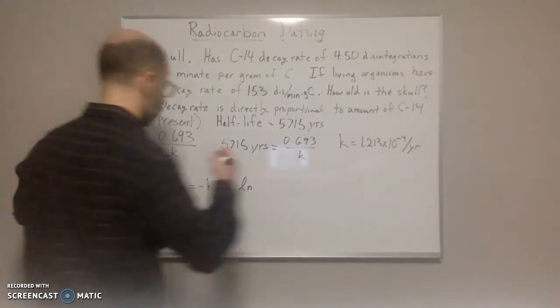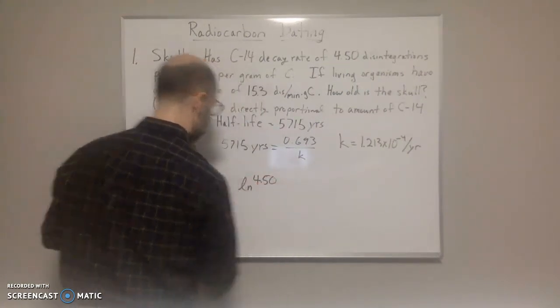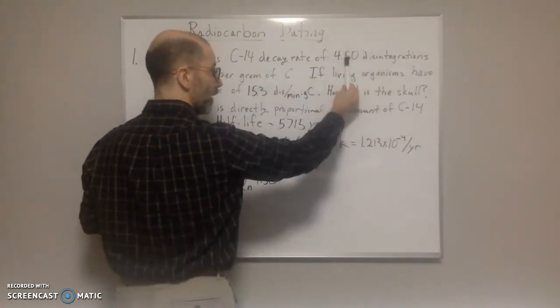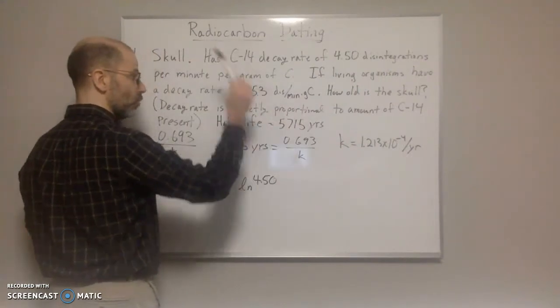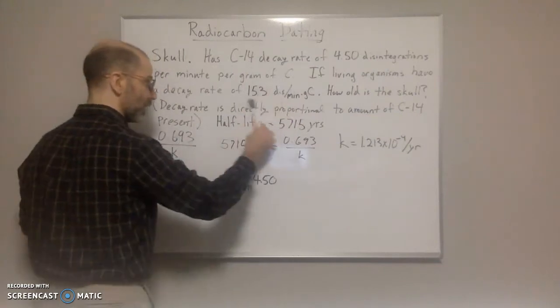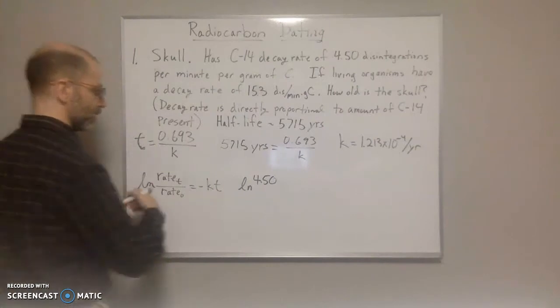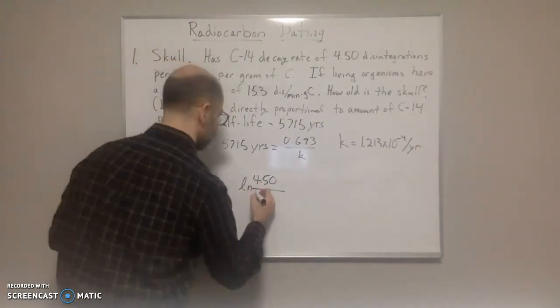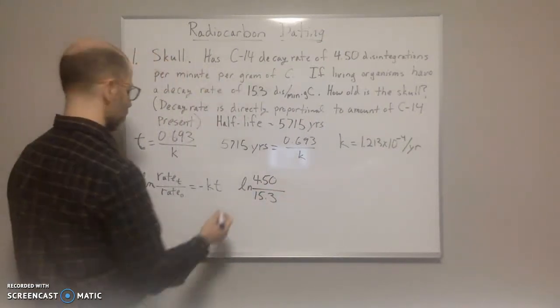So 4.50 disintegrations, this is what it is right now for the skull. Here's what it presently is right now for living things. So how long did it take to go from here to here? So this is at time t. And what is it initially, like right now? 15.3.